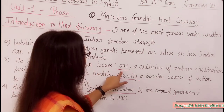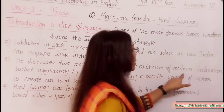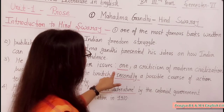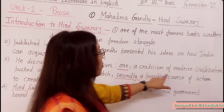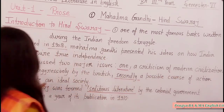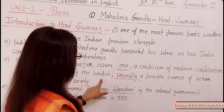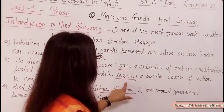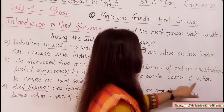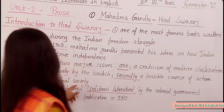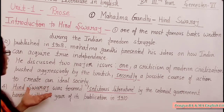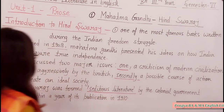The first major issue is a criticism of modern civilization, pushed aggressively by the British. The second issue is a possible course of action to create an ideal society — which way can create an ideal society.